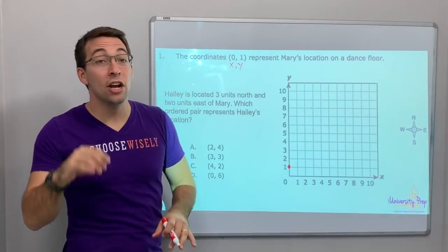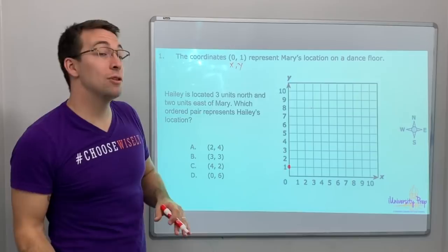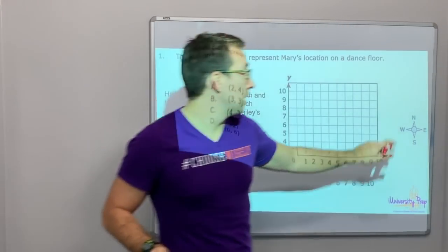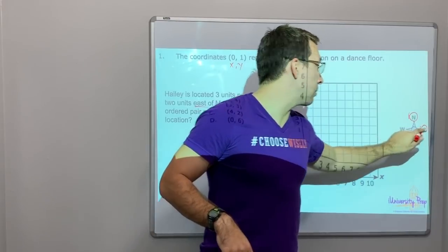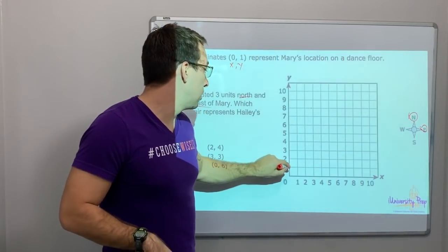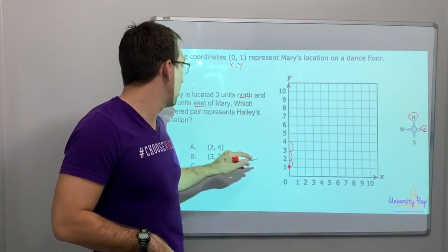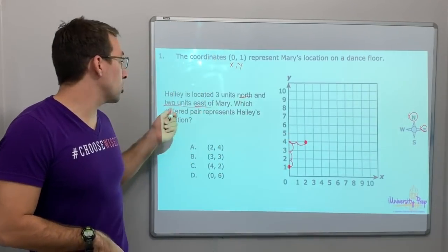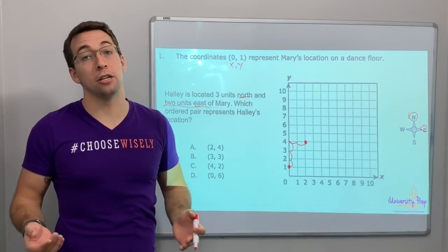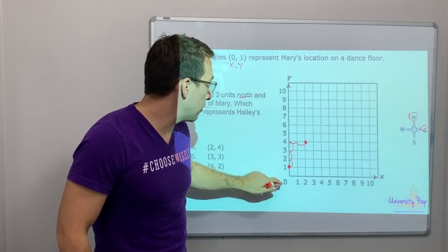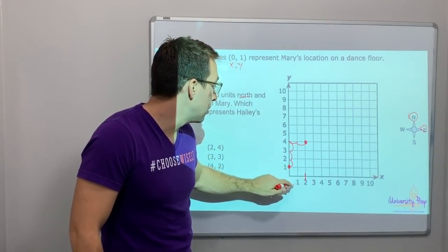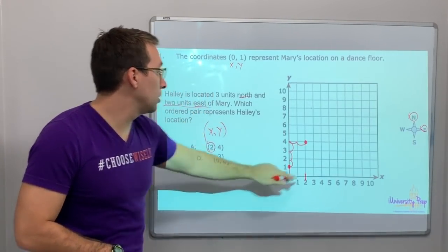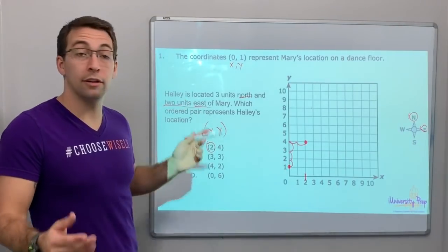Haley is located three units north and two units east. North and east — so we'll go three north: 1, 2, 3. Two units east: 1, 2. Which ordered pair represents Haley's location? We've got two. X always comes first — x and then y. So the answer is 2, 4.